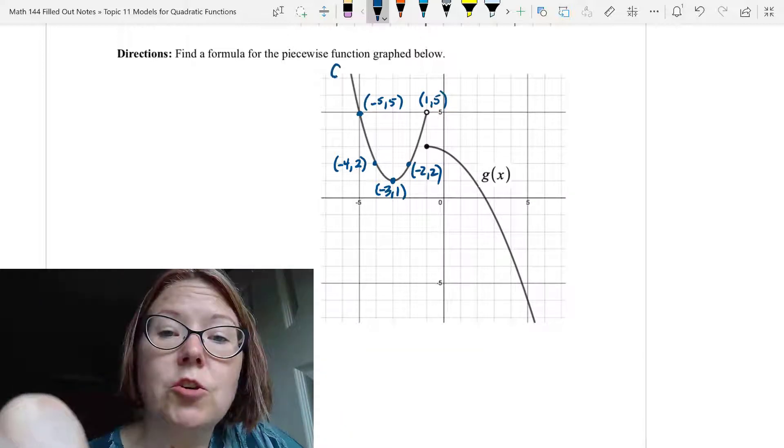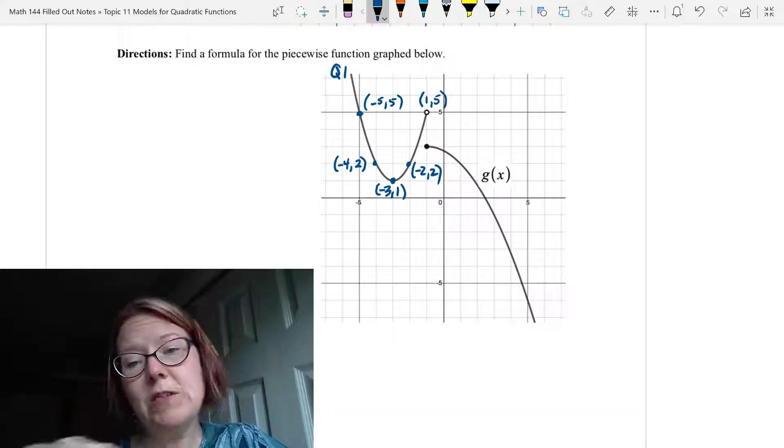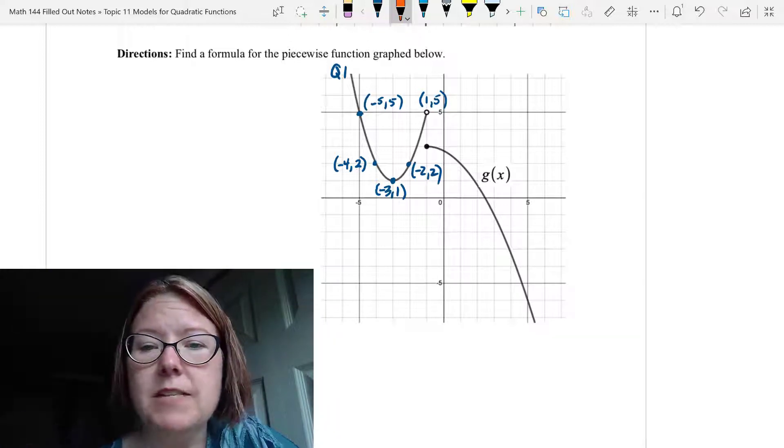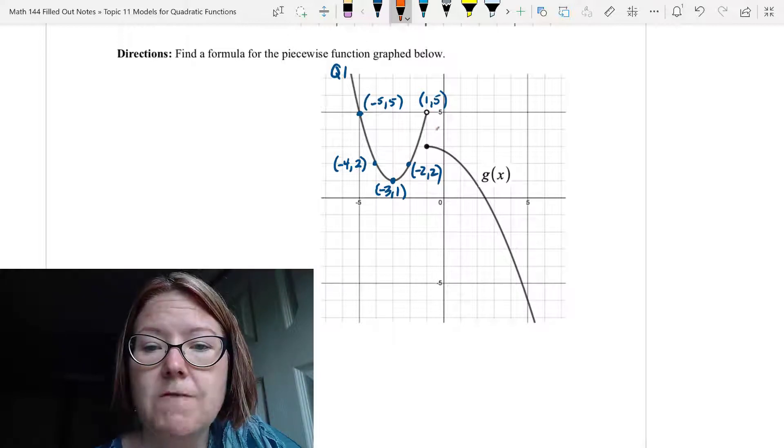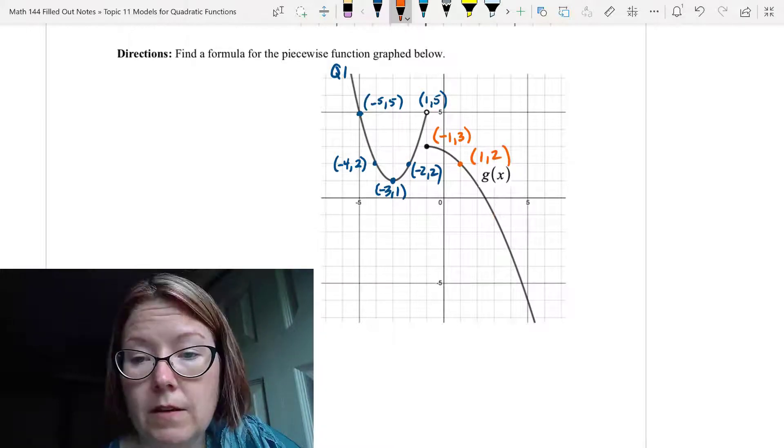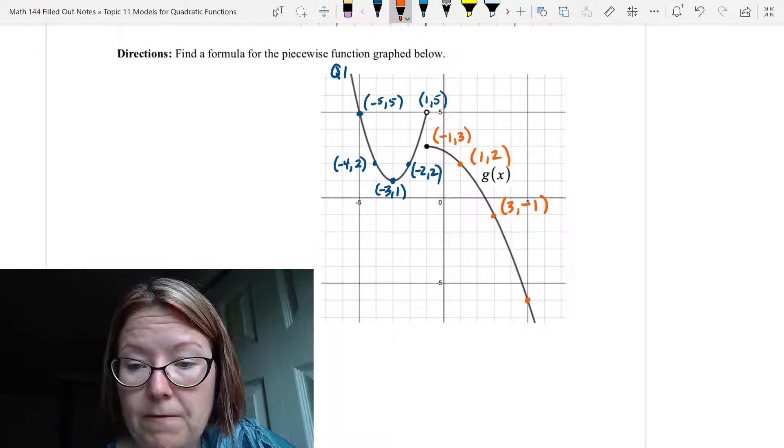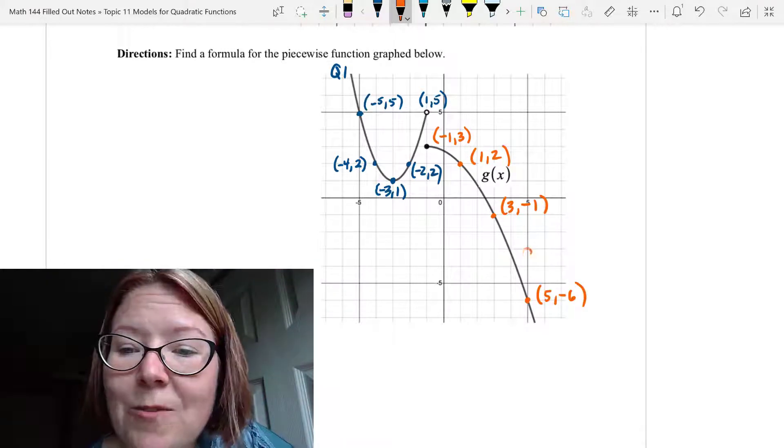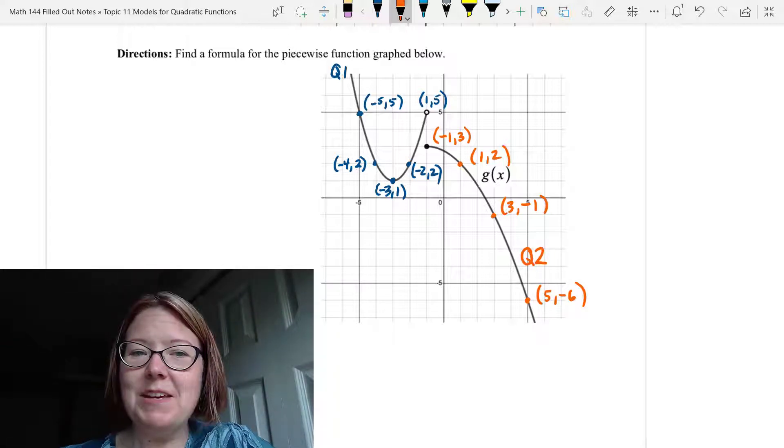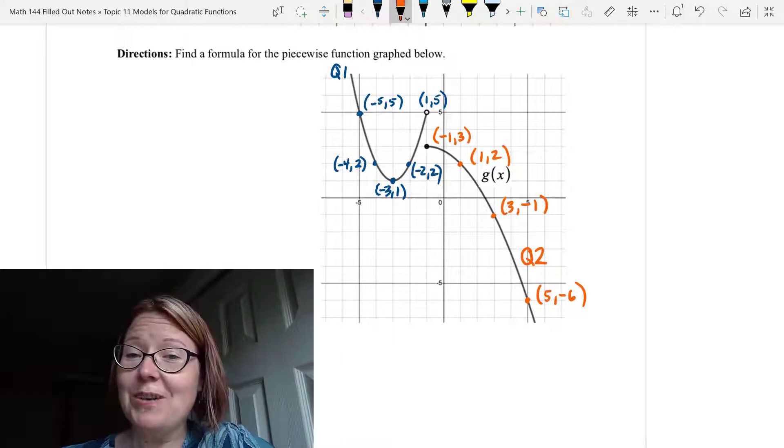This other parabola piece is opening down, and it looks like we might just have half of it or a part of it. I'm going to put these points in a different color to make it a little bit easier. The first point is at (-1, 3). You have another point that looks pretty nice at (1, 2), another one at (3, -1), and maybe (5, -6). Let's call that one Q2 for quadratic 2. So you guys go ahead and find me a formula for this piecewise function given that data. Pause the video and come back when you're finished.